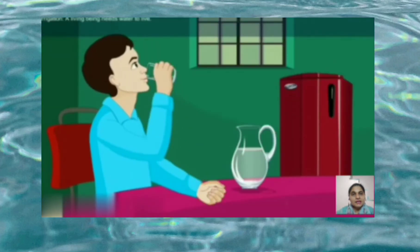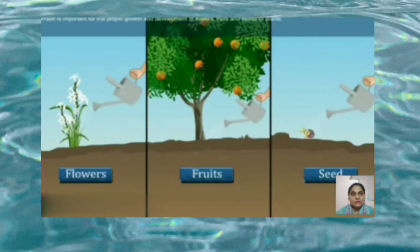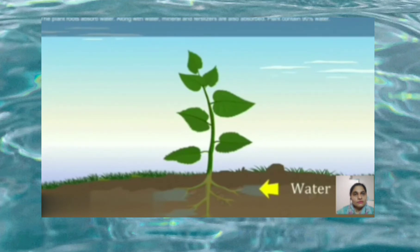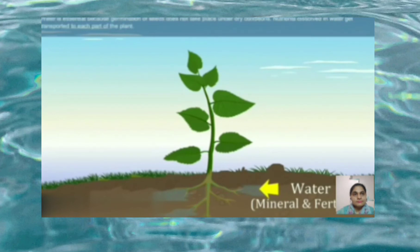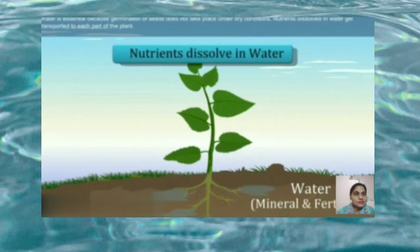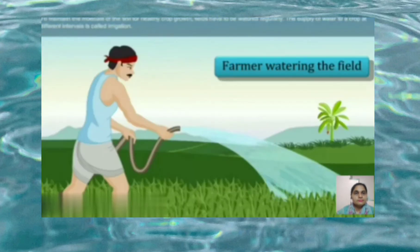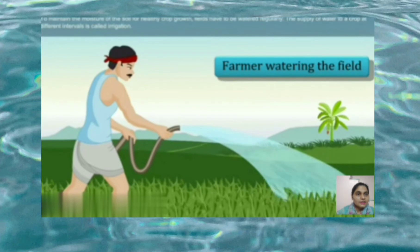A living being needs water to live. Water is important for the proper growth and development of the flowers, fruits, and seeds of plants. The plant's roots absorb water, and along with water, minerals and fertilizers are also absorbed. Plants contain 90 percent water. Water is essential because germination of seeds does not take place under dry conditions, and nutrition dissolved in water gets transported to each part of the plant. To maintain the moisture of the soil for healthy crop growth, fields have to be watered regularly. The supply of water to a crop at different intervals is called irrigation.